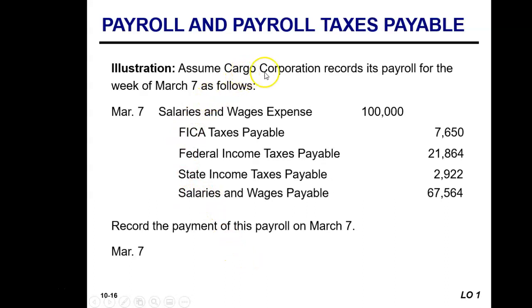Assume that Cargo Corporation requires payroll for the week of March 7. The gross amount earned by the employees is an expense for the employer, so we would debit salary and wage expense for $100,000. There are deductions being withheld from your earnings each pay period for things such as FICA taxes — which stands for Social Security Tax and Medicare Taxes — as well as federal income taxes and state income taxes. The deductions withheld from your pay each pay period are recorded as a liability by your employer.